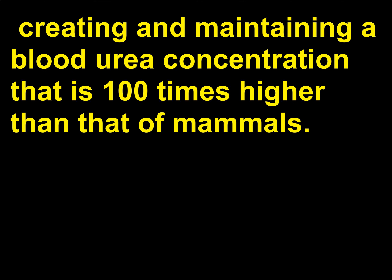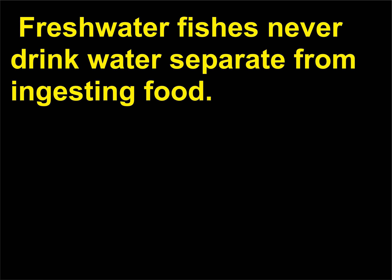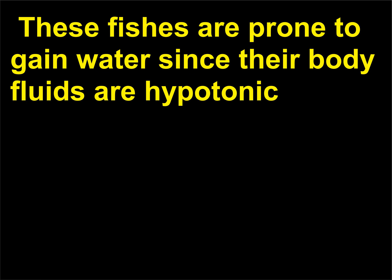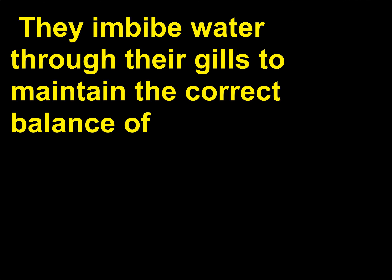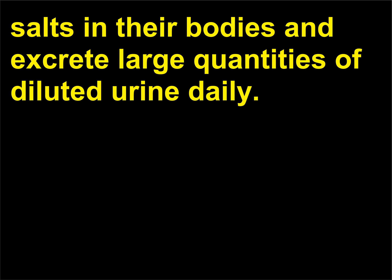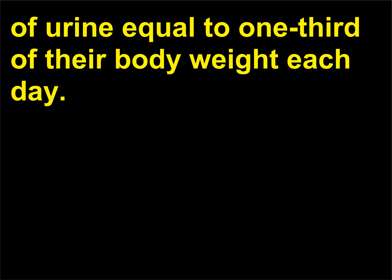They reabsorb the waste product urea, creating and maintaining a blood urea concentration that is 100 times higher than that of mammals. Their kidneys and gills thus do not have to remove large quantities of salts from their bodies. Freshwater fishes never drink water separate from ingesting food. These fishes are prone to gain water since their body fluids are hypotonic, containing a lesser concentration of salts, to the surrounding water. They imbibe water through their gills to maintain the correct balance of salts in their bodies and excrete large quantities of diluted urine daily.